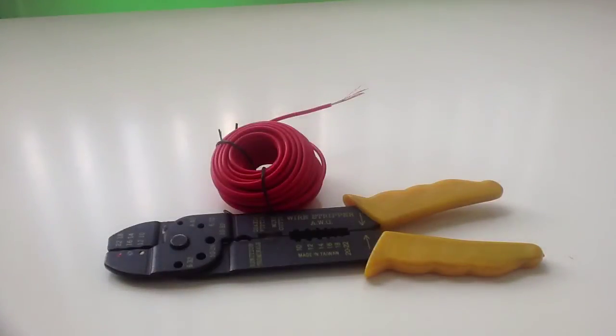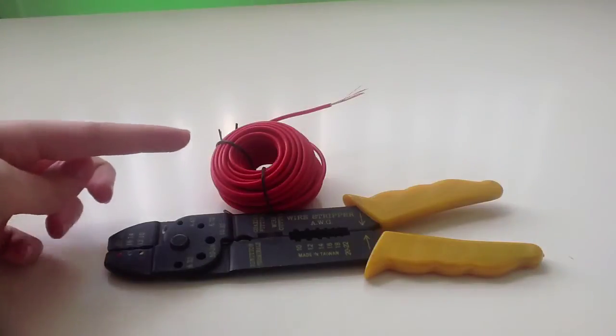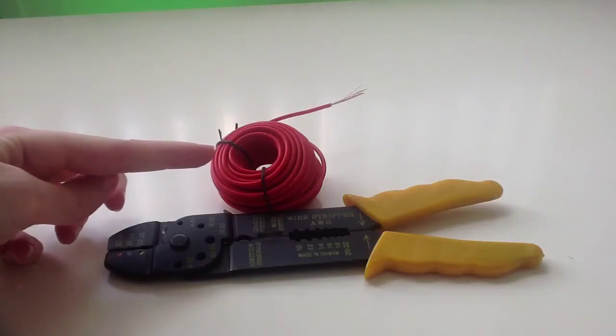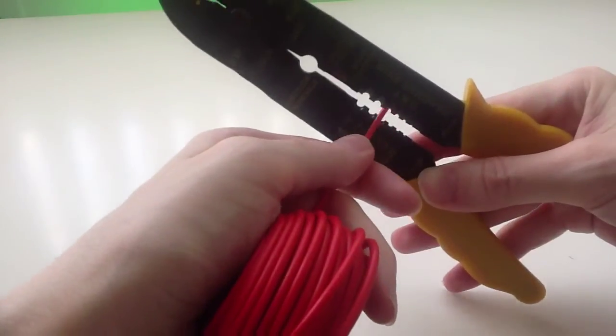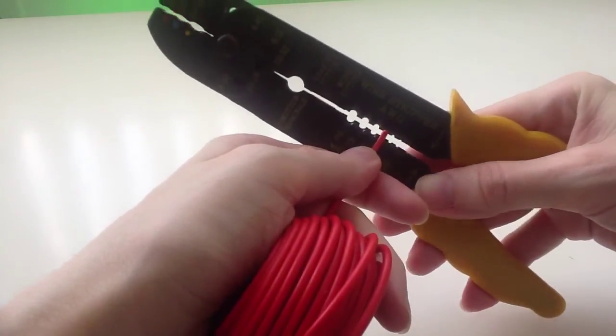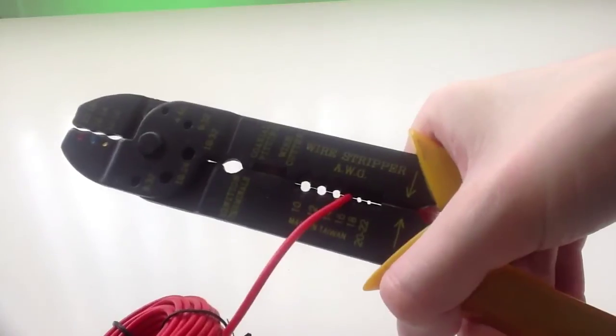For activity 8, I have 16 gauge insulated copper wire and a wire stripper. I'm using the wire stripper to strip the insulation from the 16 gauge copper wire.